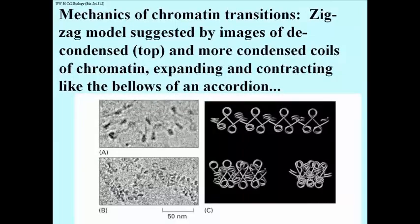In going from a 10 nanometer filament — shown in A on the left here and cartooned alongside it — to the solenoid, or B, shown in the lower figure on the left and cartooned alongside it, there is a mechanism that has been proposed to explain how 10 nanometer filaments might condense to form the solenoid and might even undergo several transitions.